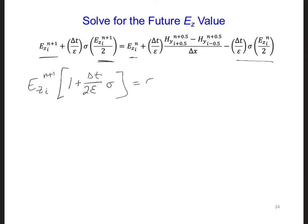And then on the right side, we have Ez at n and we have 1 minus delta t over 2 epsilon sigma. And then we have the rest, which is this subtracting the two H fields. Dividing now the entire equation by this term, we can get an update equation as we had before.